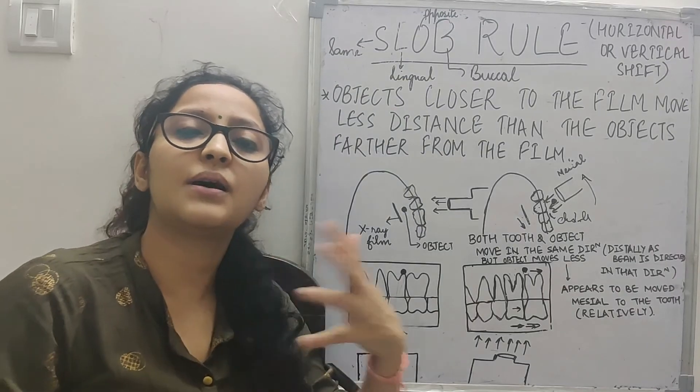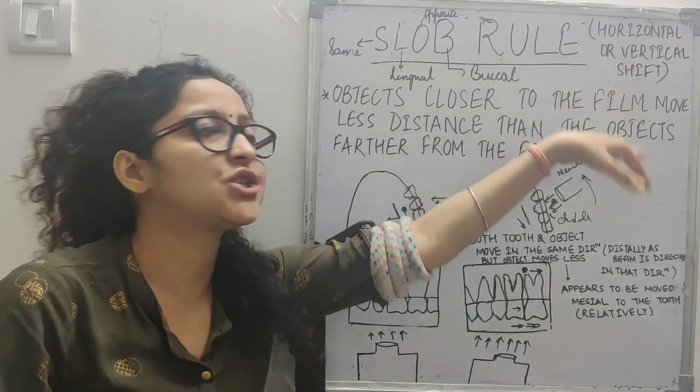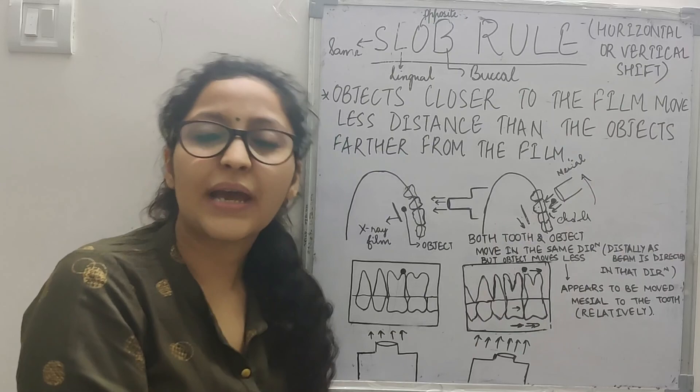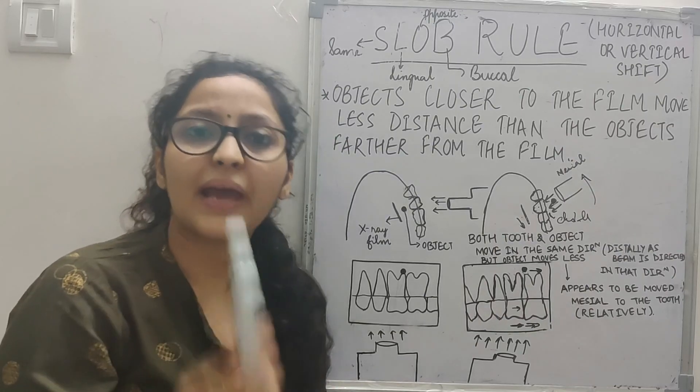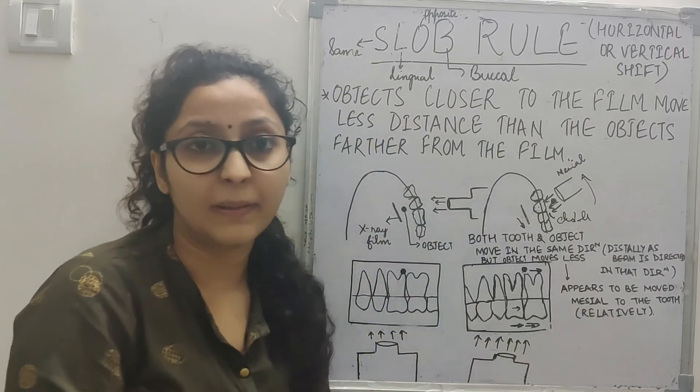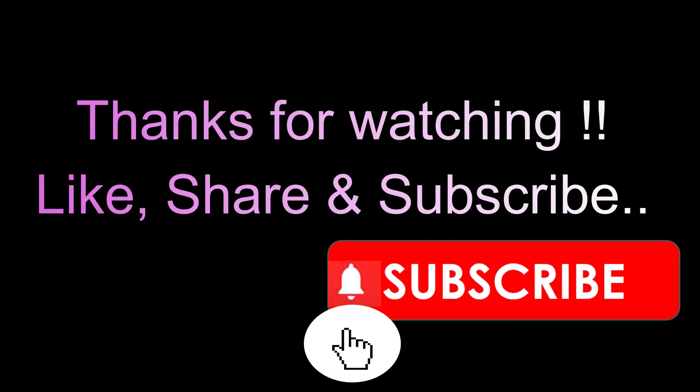The same principle applies when we shift the tube head vertically. This is a very important technique when planning any kind of surgery, such as removing an impacted tooth or for orthodontic treatment - we need to know whether the tooth is palatally located or on the buccal aspect. That brings us to the end of the video. If you have any doubts or queries, since it's a very confusing topic, please leave a message in the comment section below. Thank you for watching.